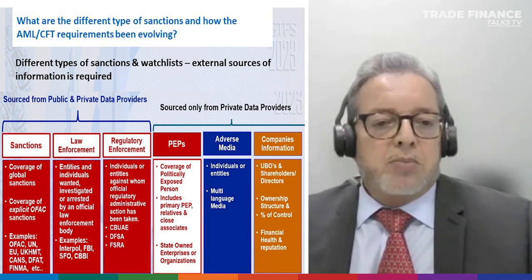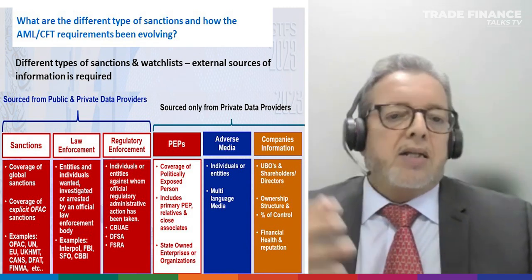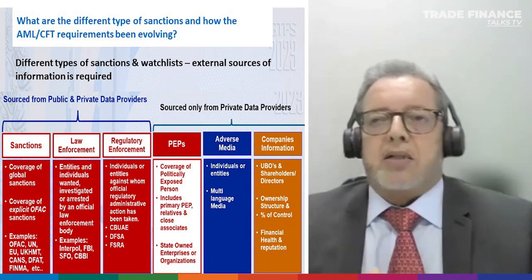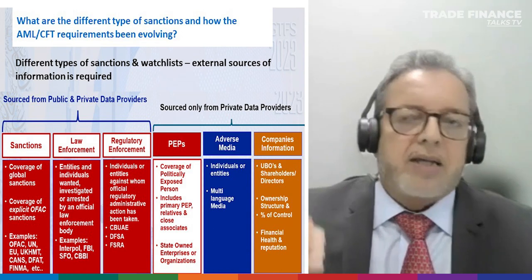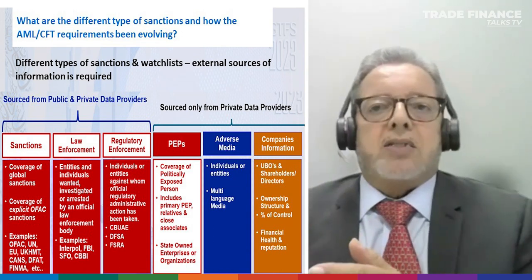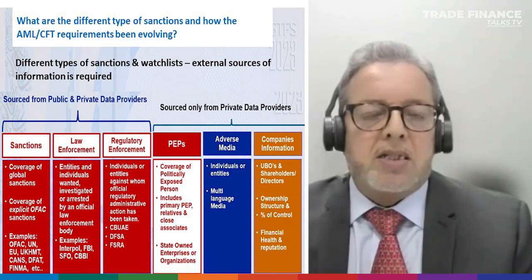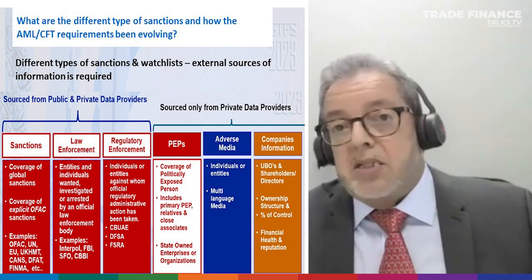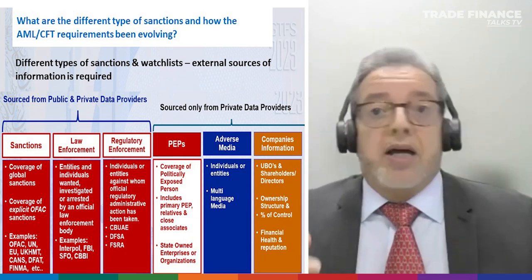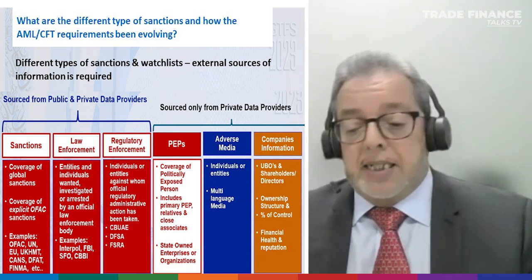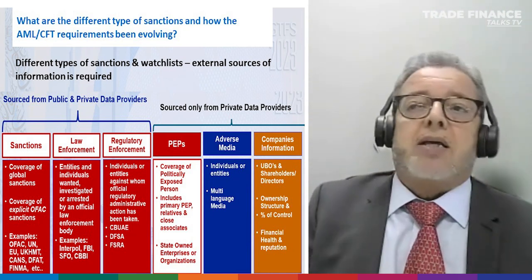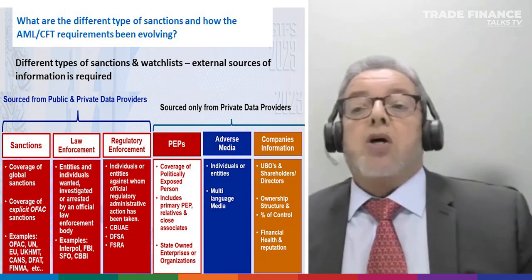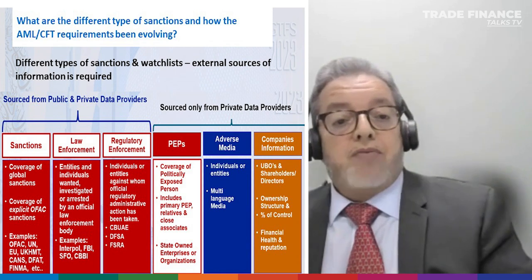The third level is when you want to do enhanced due diligence: you look at adverse media — articles and news — because when the financial risk and reputational risk are high, you want to better understand who this entity is. If the entity is not sanctioned and you don't know them, you need more information. Recently, in the last three to four years, there has been a big emphasis on the ultimate beneficial owner of a company — who is behind the company.